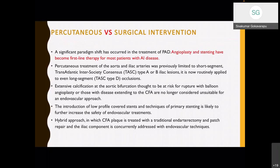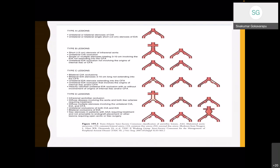In the management of aortoiliac occlusive disease, there are percutaneous and surgical interventions. A significant paradigm shift has occurred in the treatment of peripheral arterial disease. Angioplasty and stenting have become the first-line therapy for most patients with aortoiliac disease. Percutaneous treatment was previously limited to short-segment TASC A and B lesions, but is now routinely applied to even TASC C and D lesions. Extensive calcification of the aortic bifurcation is a risk for rupture with balloon angioplasty. With the introduction of low-profile covered stents, risk of rupture is reduced and hybrid approaches within which CFA plaque is treated with endarterectomy and the aortoiliac component is concurrently addressed with endovascular techniques.